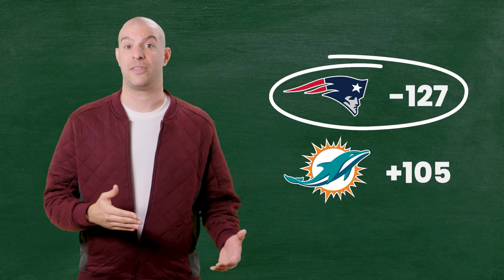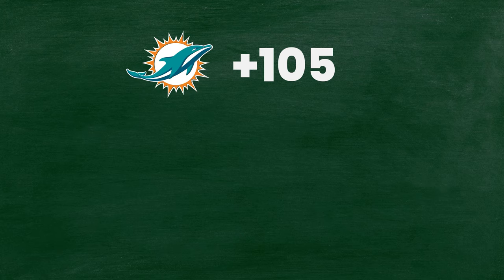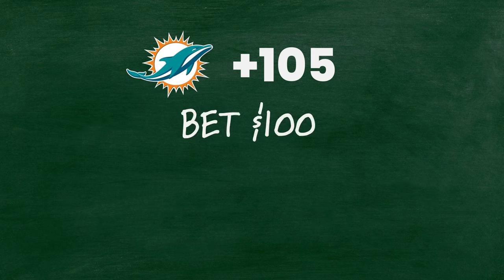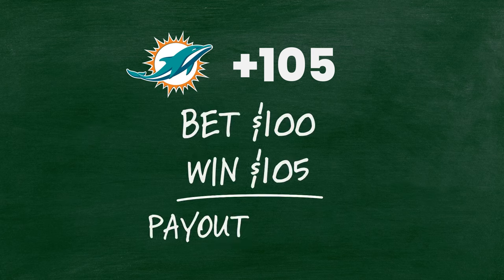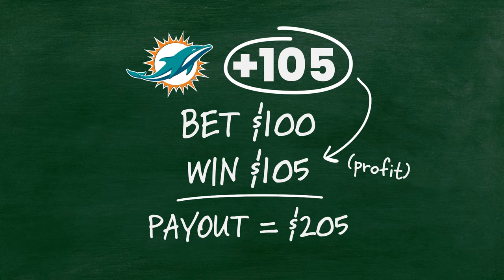The odds are also telling us that the oddsmakers predict the Patriots are better than the Dolphins. And usually better teams beat worse teams. Since the Patriots will probably win this game, sportsbooks are going to make you bet a little bit more if you want to bet on them to win. But better teams don't always win — crappy teams beat good teams all the time. And that's why the odds on the underdog Dolphins are a positive number. They're listed at plus 105, which means that if you bet $100, you'd win $105 if they pulled off the upset.